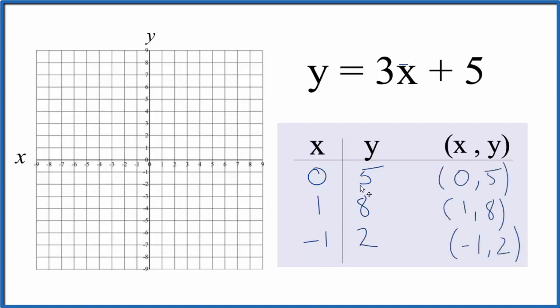These are the points we'll graph for the equation y = 3x + 5. We go to x is 0, y is 5, x is 1, y is 8, over 1 and 8.